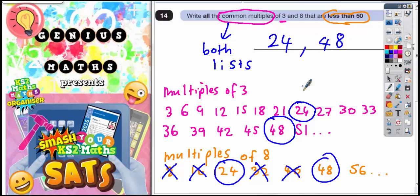They are the two answers that you need to have circled. 24 is a multiple of 3 and it's also a multiple of 8, and so is 48. It's a multiple of 3 and it's a multiple of 8.